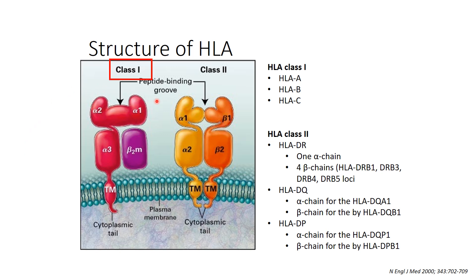From the figure, HLA class 1 is formed of two molecules. The alpha chain is formed of different subunits: alpha 1, alpha 2, alpha 3, the transmembrane complex, and then the cytoplasmic tail. The second molecule is the beta-2 microglobulin. In the HLA lab, we only do typing for the alpha chain of class 1 — we never do typing for the beta-2 microglobulin.